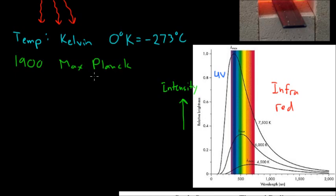So what Max Planck showed is that these lines can be completely described just by the temperature of the object. So the spectra just depends on temperature.